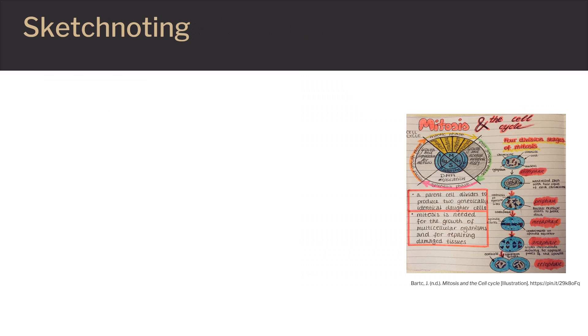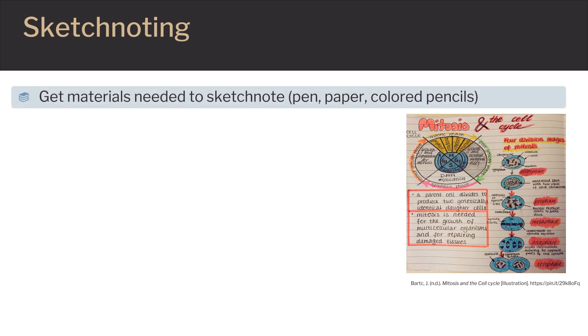The last tip is to use sketchnoting when trying to learn a new topic in the course. Sketchnoting is a visual form of note-taking. To begin, make sure you have everything you need to sketchnote. Once you have the pen, paper, and colored pencils, you can start. Sketchnoting is great in biology for complex systems and processes.